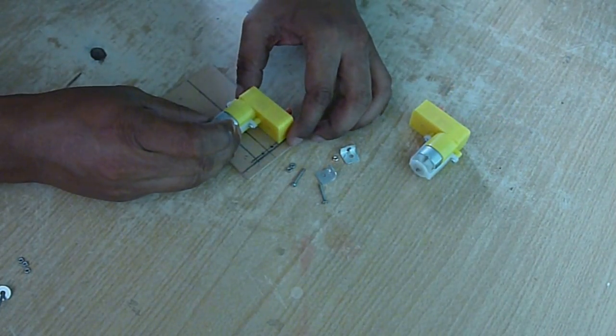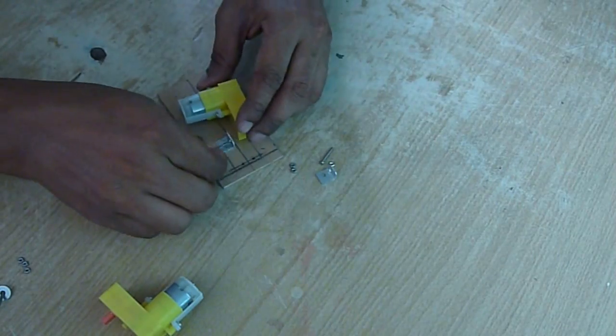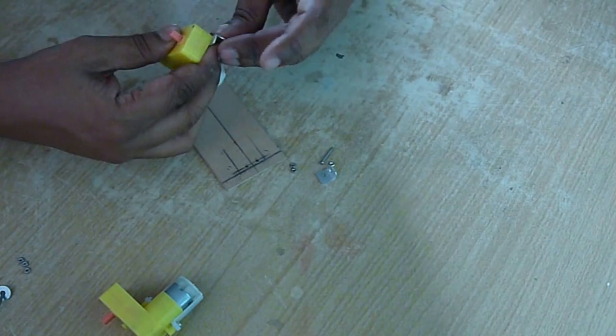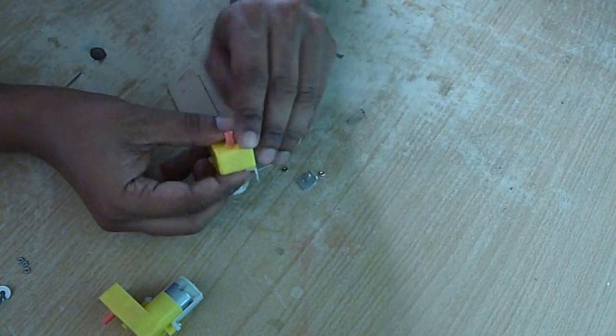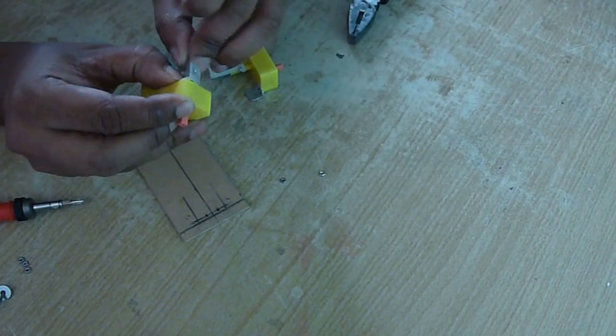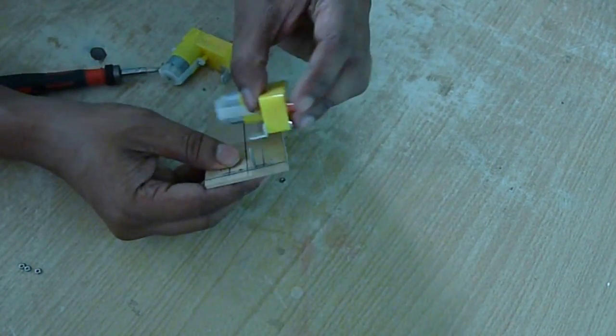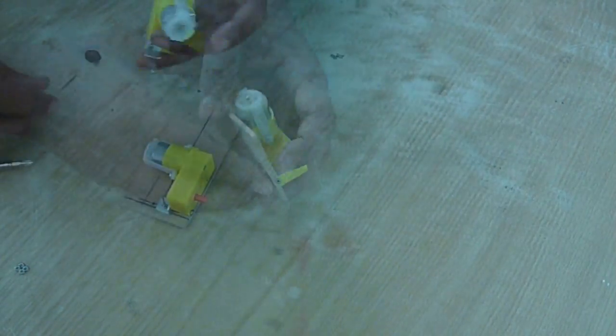One will be in horizontal position, another will be in vertical position. First fix the L-shaped clamp with the motor, then fix those L-shaped clamps on the cardboard chassis.